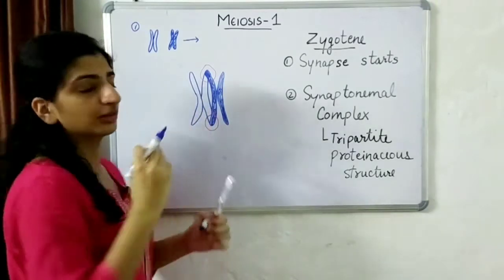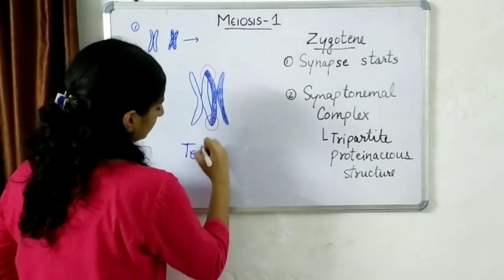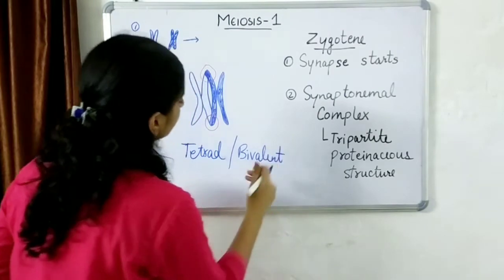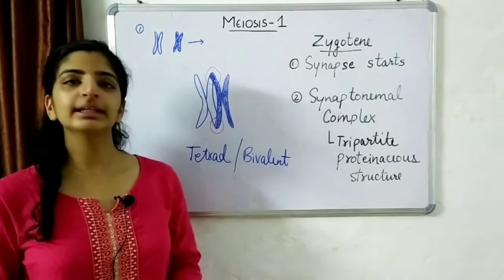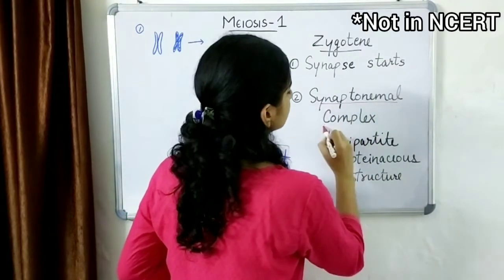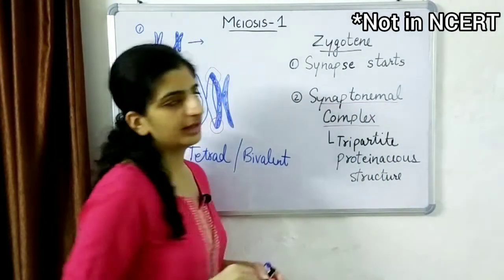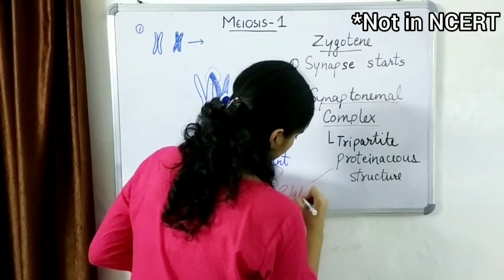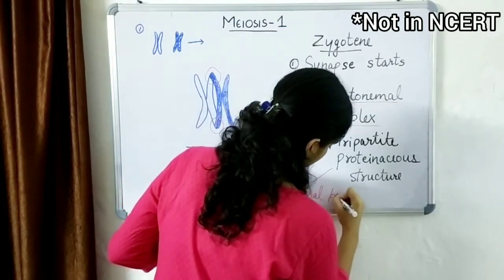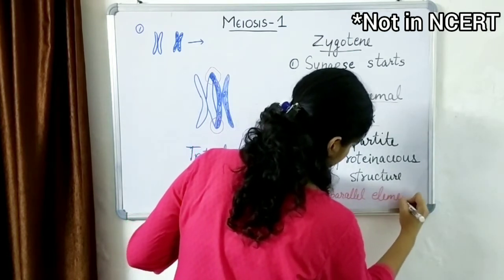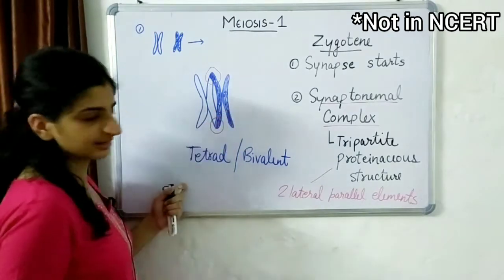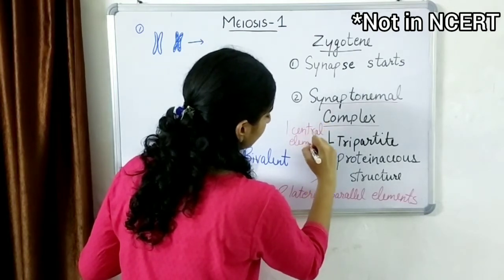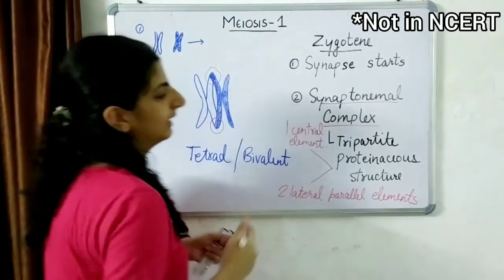This structure where the chromosomes are connected to each other is known as a tetrad or bivalent. The formation of this tetrad or bivalent is possible because of a proteinaceous structure called the synaptonemal complex. It is a tripartite proteinaceous structure with two laterally placed parallel elements associated with the sister chromatids, one central element, and some transverse elements.